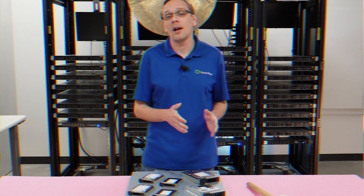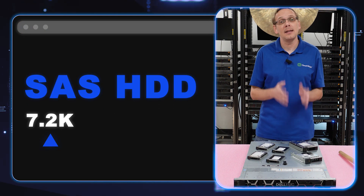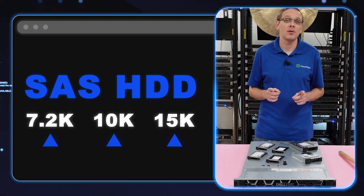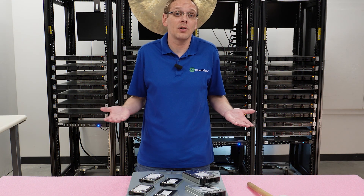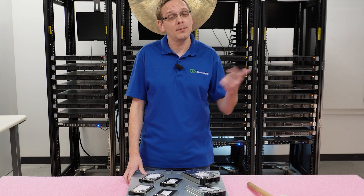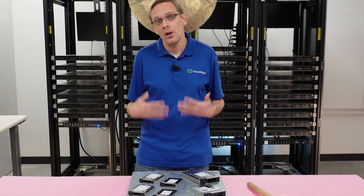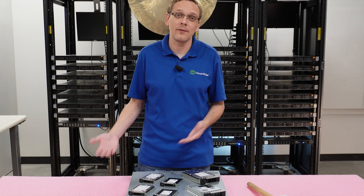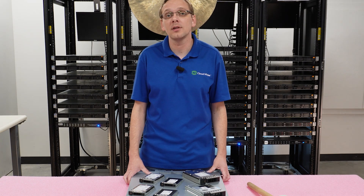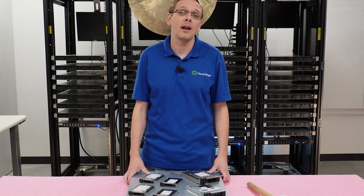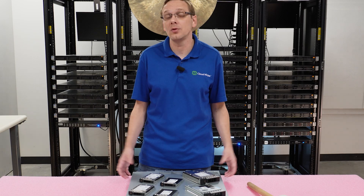On the hard drive side with SAS, the speeds are going to be 7.2k, 10k, and 15k. I always like to point out that the 10k and 15k are mechanical devices — those ball bearings are just spinning and spinning. Once you use a SAS drive for three, four, five years, you can expect it to fail over time because those ball bearings will wear out. So if you're using a used SAS drive, I recommend keeping a spare and definitely using HD Sentinel to see how long it's actually been used.